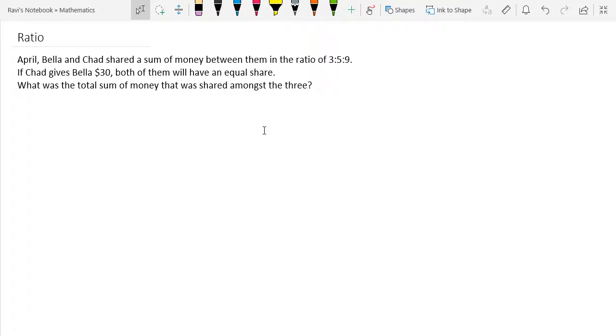Hi, we are now looking at a question on ratio. So this question says that April, Bella and Chad shared a sum of money between them in the ratio of 3 to 5 to 9. So let's get that first.